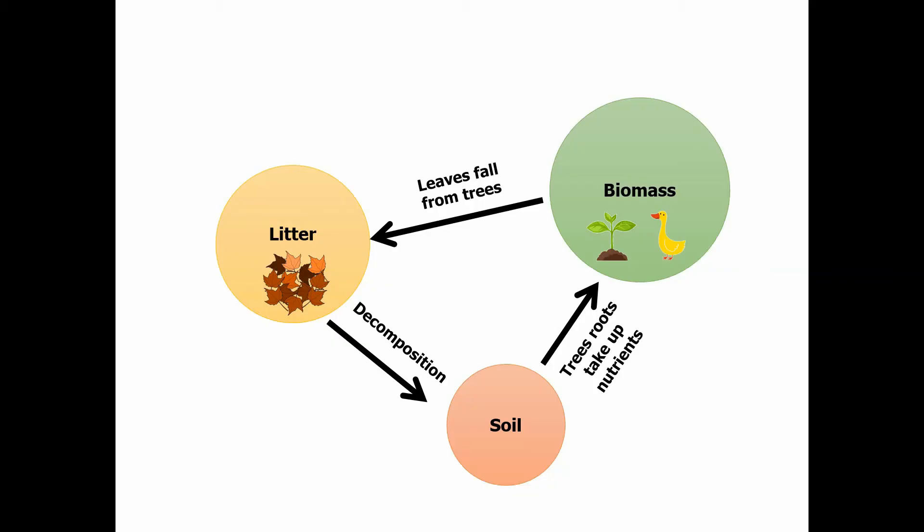However, some things can also add or remove nutrients from each of the stores. For the biomass, for example, if we were to chop trees down, that process of deforestation — taking those trees somewhere else — means we're going to be losing nutrients from the biomass.